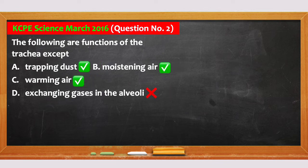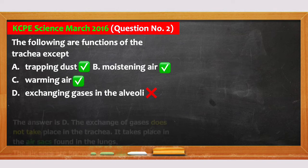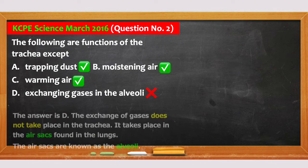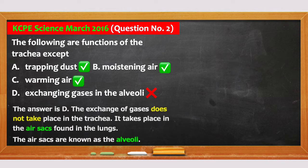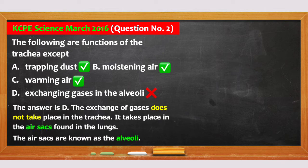The answer is D. The exchange of gases does not take place in the trachea. It takes place in the air sacs found in the lungs. The air sacs are known as the alveoli.